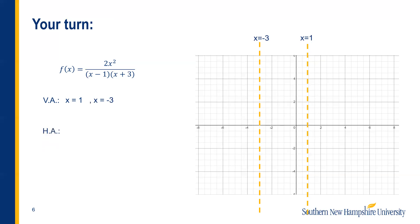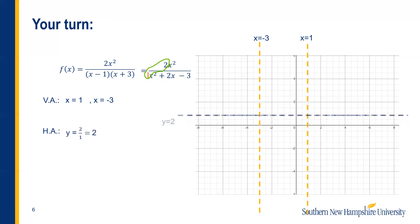Now let's look for a horizontal asymptote. It might help to multiply the two binomials together using FOIL. If you do that, you'll get x squared plus 2x minus 3 in the denominator. Now looking at the degrees, there's an x squared on top and an x squared on the bottom — the exact same degree. So we reduce the leading coefficients: there's an imaginary 1 in front of x squared in the numerator, and 2 in the denominator. Wait — 2 divided by 1 gives us 2, so the horizontal asymptote is at y equals 2.